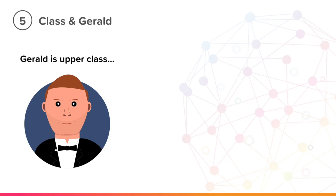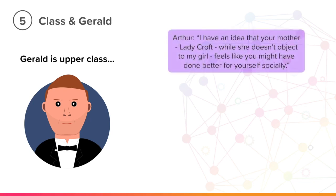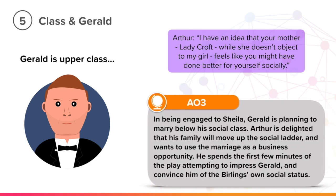As the only upper class character, Gerald's social status is significant to the meaning of the play. Near the beginning, Arthur says to Gerald, 'I have an idea that your mother, Lady Croft, while she doesn't object to my girl, feels like you might have done better for yourself socially.' This is important as it links nicely to context. In being engaged to Sheila, Gerald is planning to marry below his social class. Perhaps his mother is unimpressed with this arrangement, as it may damage her family's social status.